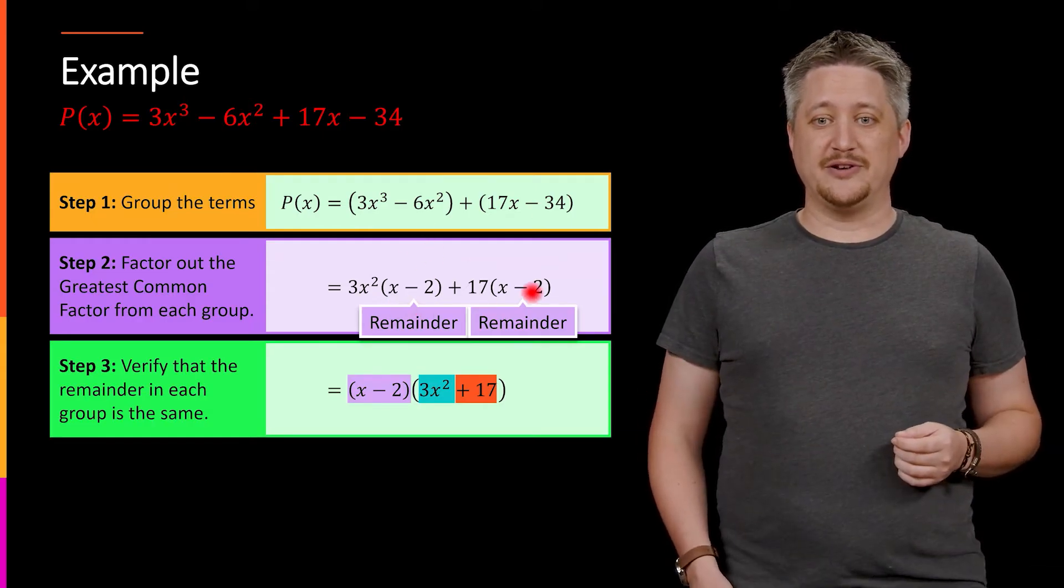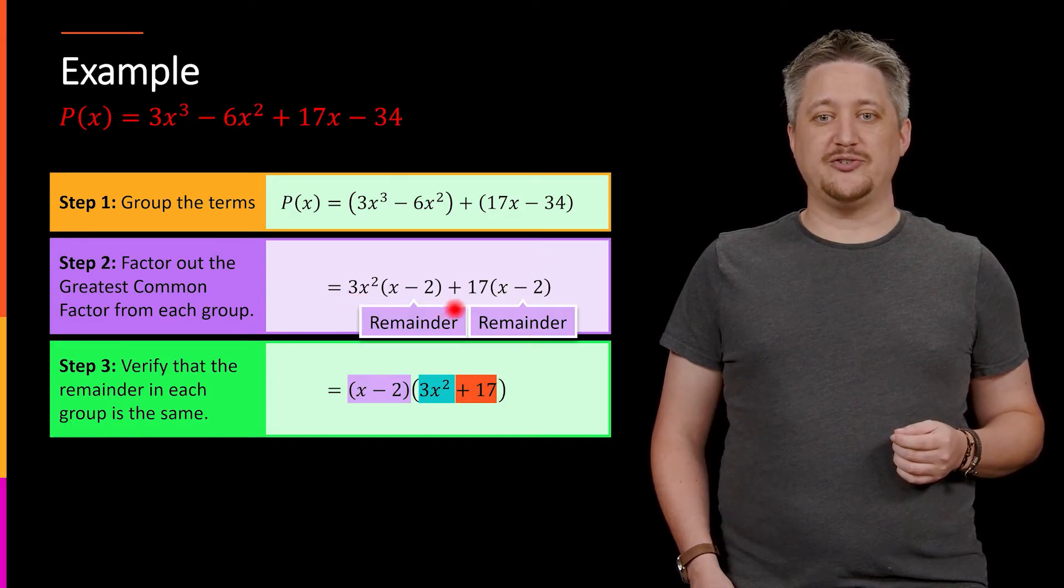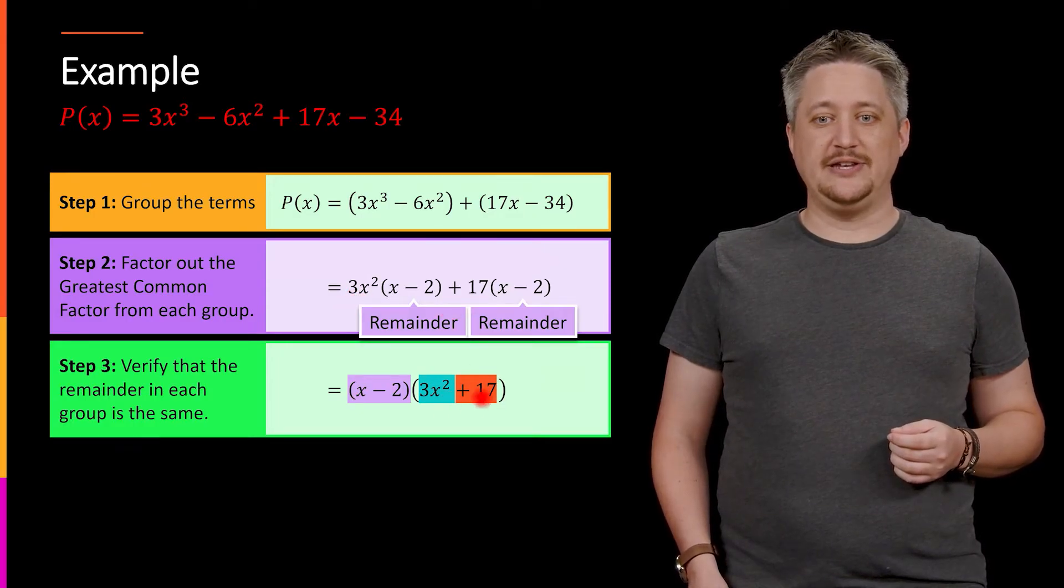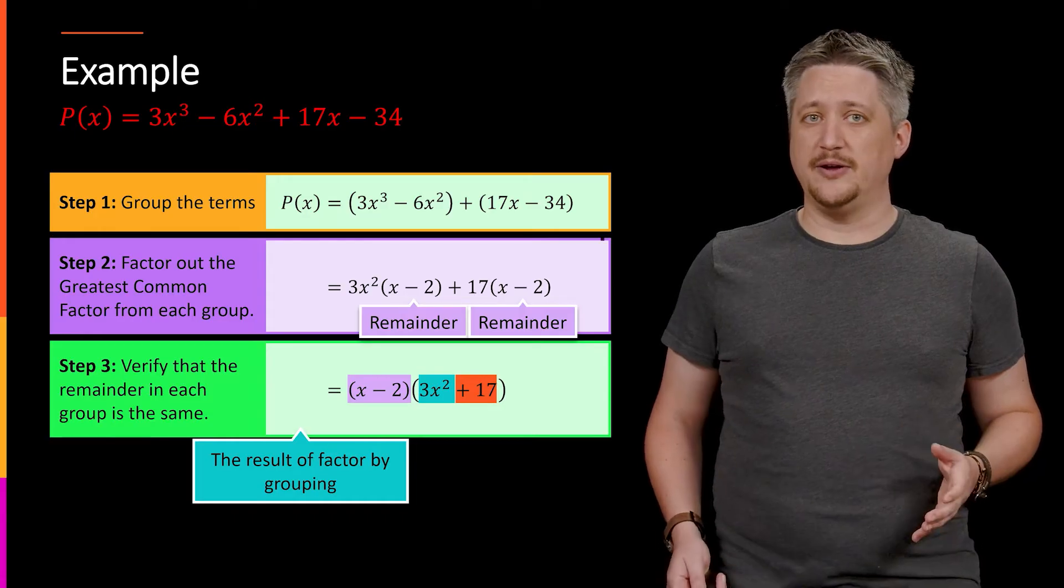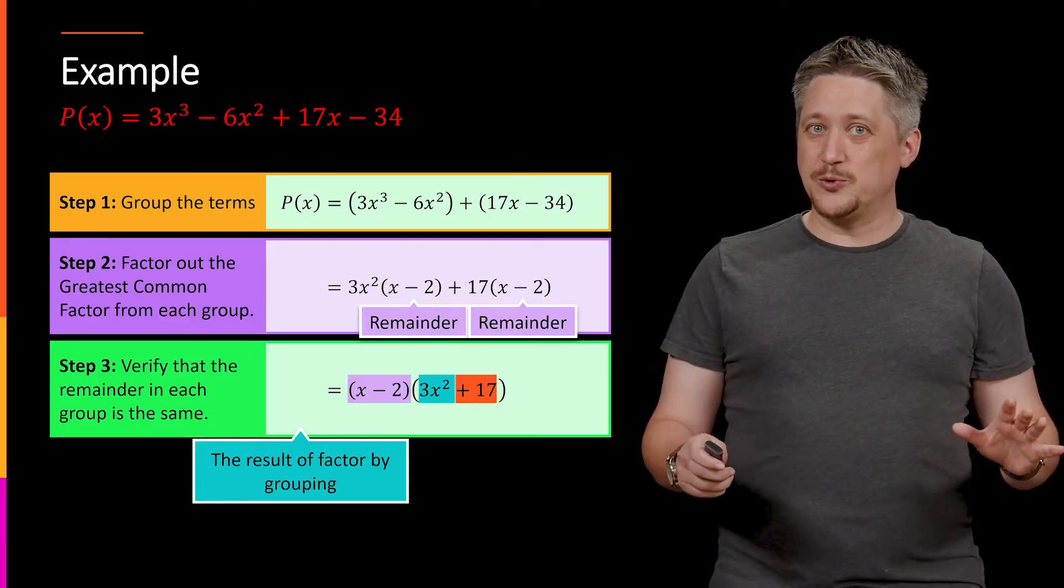So again, to be very clear, the x minus 2, we factor both of those out to get this piece and then what's left over in each, like the 3x² and then the plus 17, become the other part. So this is the result of factor by grouping. This is the end of the grouping step.